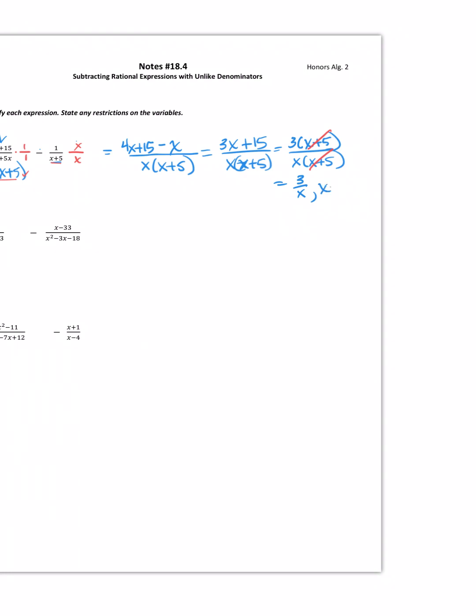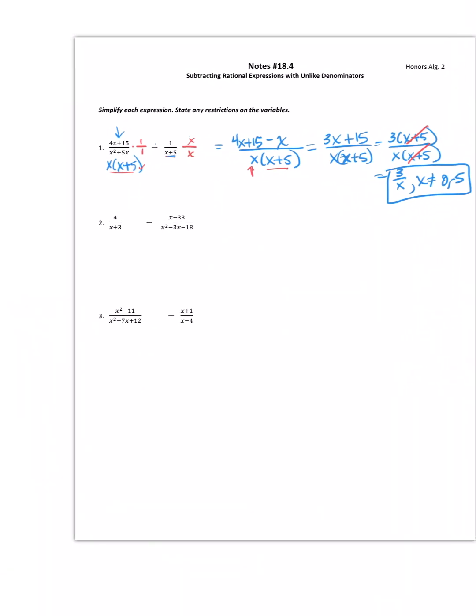But I also need to consider the restrictions. Where can x not be? Well, look at this. x cannot be a 0. And if I jump this over the equal sign in my mind, that means x cannot be a negative 5. So, there's two restrictions, a 0 and a negative 5. As you can see, our answers are similar to where we've been before. Let's try another one.